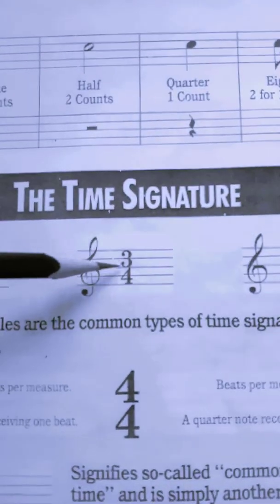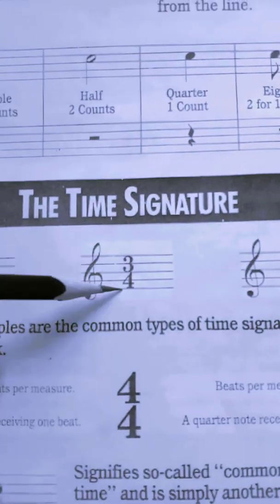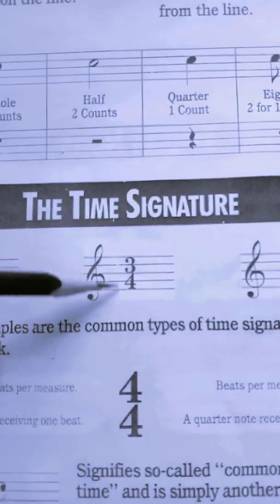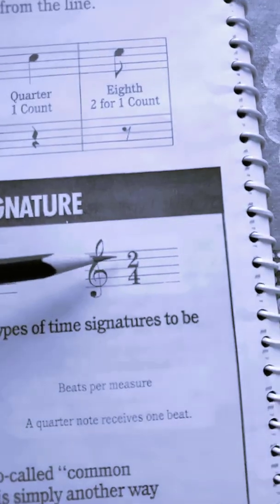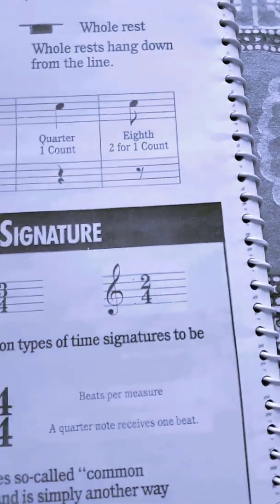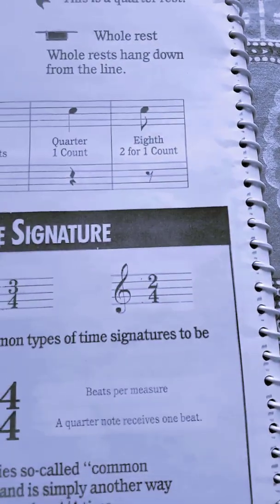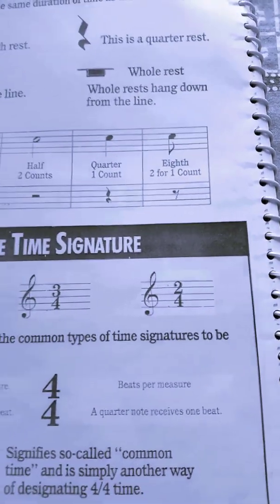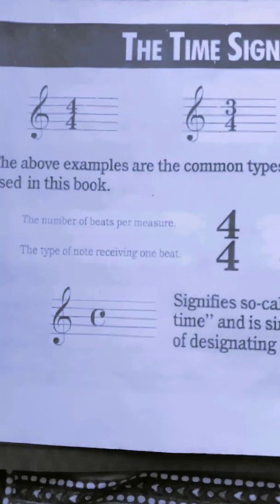A three four time signature implies that there are three quarter notes in a measure, and the two four time signature implies that there are two quarter notes in a measure, or the equivalent.